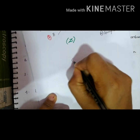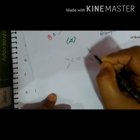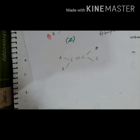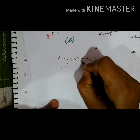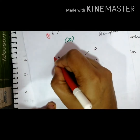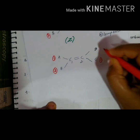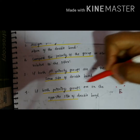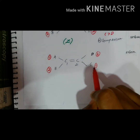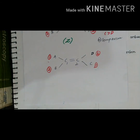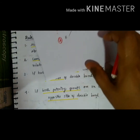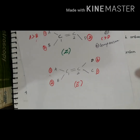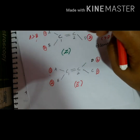For example, taking compound C double bond C with groups A, B on one carbon and D, C on the other — assigning priorities gives 1, 2 on one side and 1, 2 on the other. If both priority-1 groups — A and C — are on opposite sides, then this is assigned as E. E means opposite side.